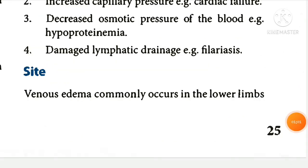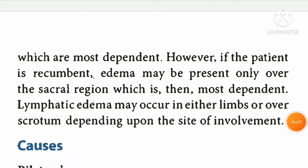Regarding sites: venous edema commonly occurs in the lower limbs, which are the most dependent. However, if the patient is recumbent, edema may be present only over the sacral region, which is then the most dependent. Lymphatic edema may occur in either limbs or over the scrotum depending upon the site of involvement.